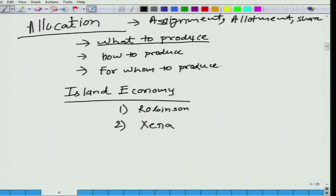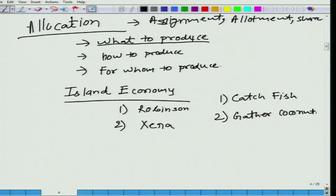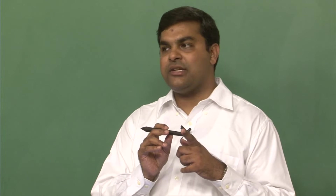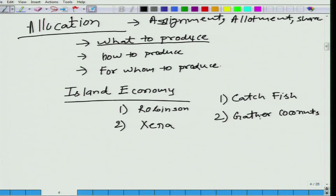There are only two activities on this island: the first activity is to catch fish, and the second activity is to gather coconuts. Now, of course, no literal production is taking place here, but we will use it in a very loose sense — the production here involves catching fish or gathering coconuts. The first question is what they should do. Time here is the scarce resource available to them.